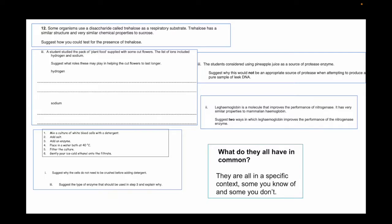So now think to yourself, what do they all have in common? The thing I identified was that the questions are all in a specific context, right? Some that we do know, some we don't. Like the top one we don't know, the leghemoglobin we also don't know about that one, so it's both a hit or miss.